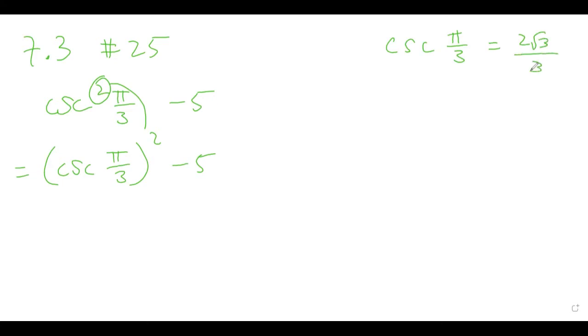So that's a given fact, and we'll take this bubble and drop it in here so that we get back 2 square root 3 over 3 to the power of 2 minus 5.